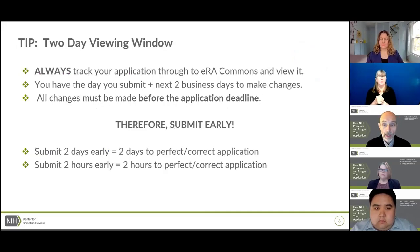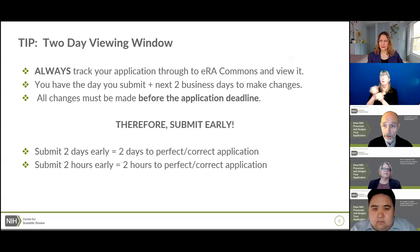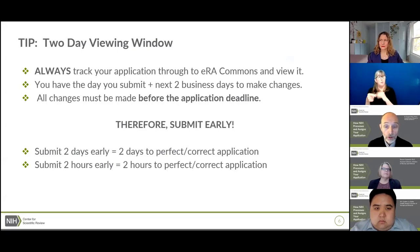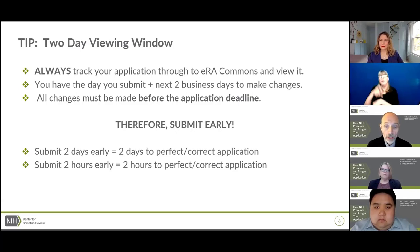There is a two-day viewing window after your application is submitted. First, make sure your application followed all the way through to the ERA Commons — if you can't view it, it doesn't exist and we can't review it. Second, it's your opportunity to make sure your application is in shape for reviewers. The system holds your application for two business days to allow you to make changes. If you submit at least two days early, you'll have the full two-day viewing window; if you submit two hours before the deadline, you only have two hours. All changes must be made before the 5 p.m. deadline.